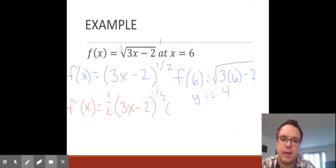Then we multiply by the derivative inside, which is 3. If we simplify that, we get 3/2 times (3x - 2) to the -1/2 power.